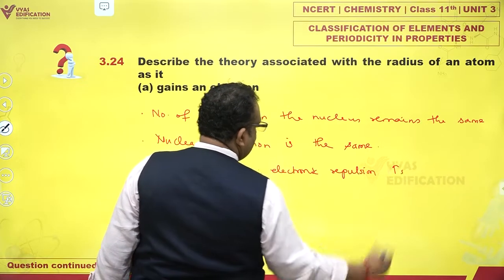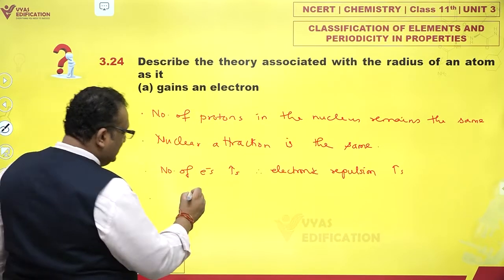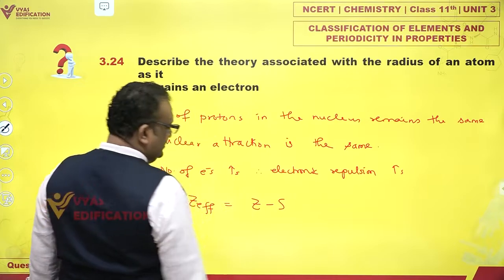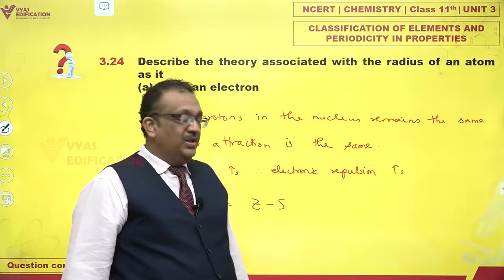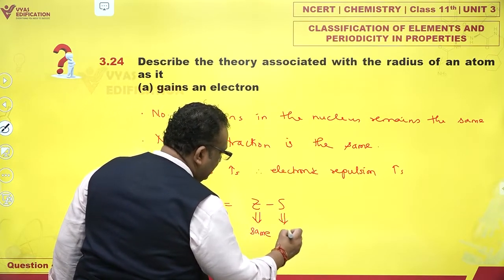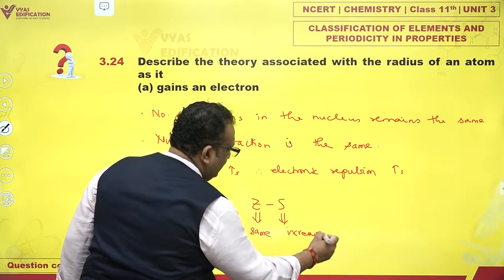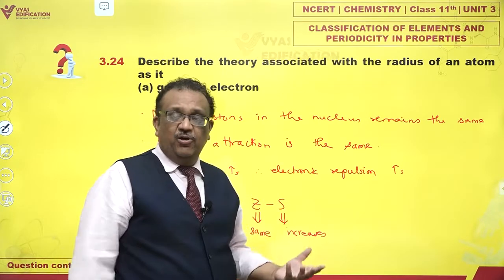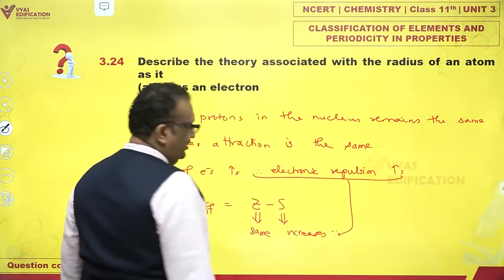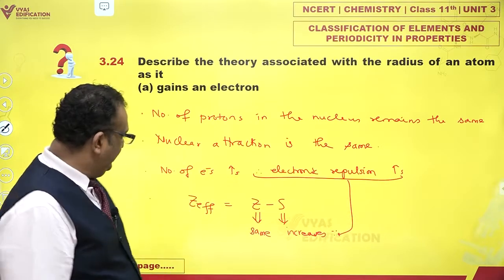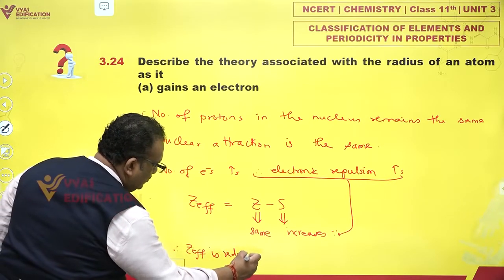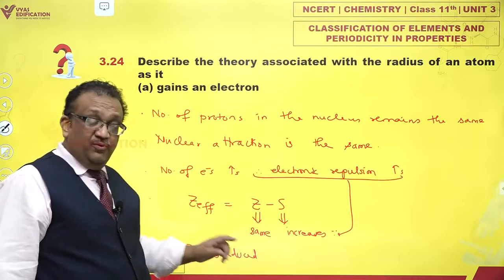There is a concept called effective nuclear charge, which is Z minus S, where S is the screening constant. The atomic number Z remains the same, but S increases because there is more electronic repulsion — more screening. Because electronic repulsion increases, the effective nuclear charge is reduced.